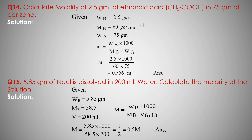Molecular mass Mb of NaCl (sodium chloride) equals 58.5 — sodium 23 plus Cl 35.5 equals 58.5. Volume is 200 milliliter. Molarity M equals mass of solute (5.85) into 1000, upon molecular mass (58.5) into volume (200). That equals 1 by 2, which is 0.5. Molarity of solution is 0.5.